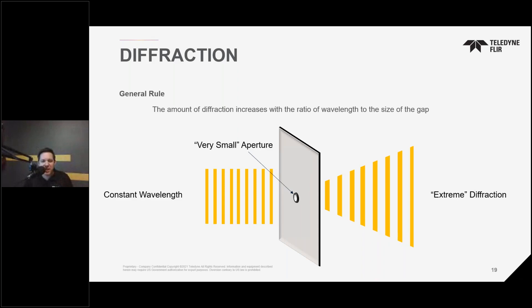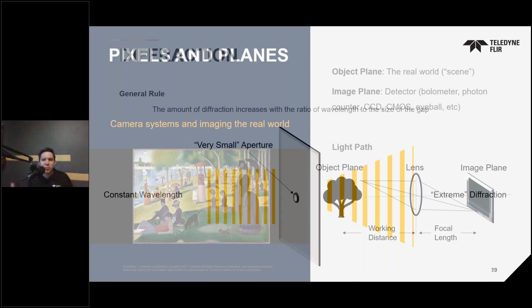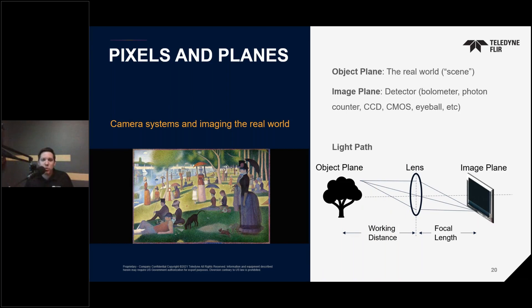Let's take a small step back and look at how light travels from the world to an imaging detector like those in an infrared camera. In an imaging system, you have the object plane and the imaging plane. The object plane is the real world — what you're looking at with the sensor. The imaging plane is the camera sensor, whether it's a bolometer, a photon counter, a CMOS or CCD detector. Light comes from the target scene, passes through the atmosphere, toward the imaging system. It then goes through the lens, which can contain multiple objectives to direct different wavelengths of light to the sensor, then through the camera aperture, and finally to the sensor itself.